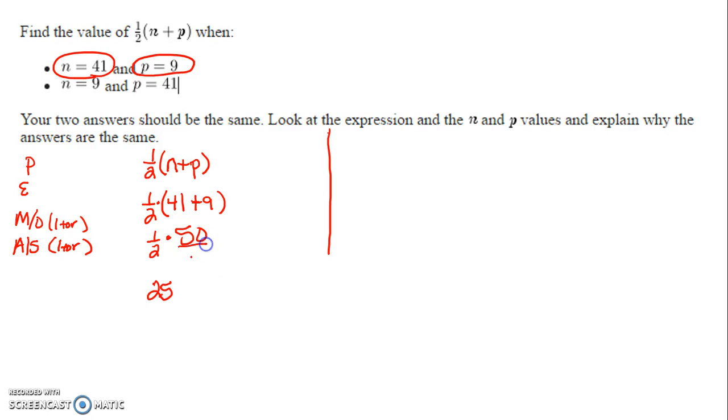If you need it, you can put the 50 over 1. Multiply straight across the top, straight across the bottom. 1 times 50 is 50, 2 times 1 is 2. 50 divided by 2 is 25.